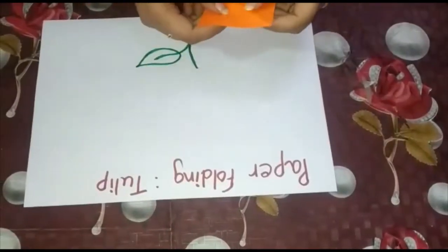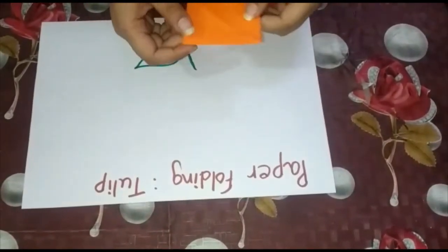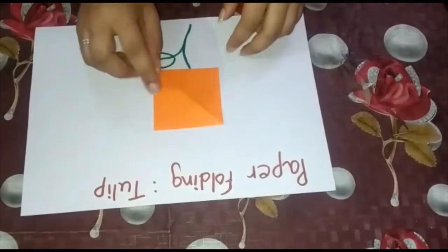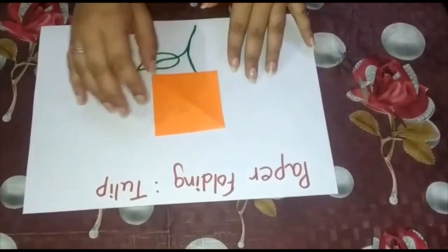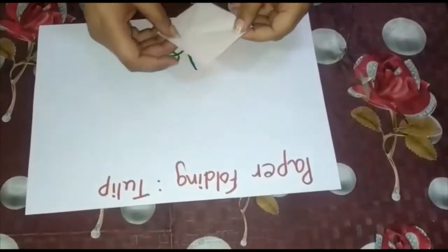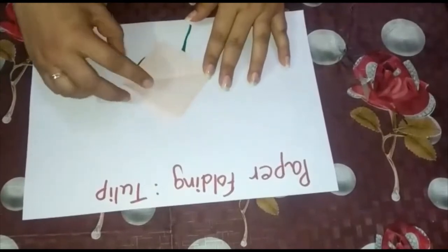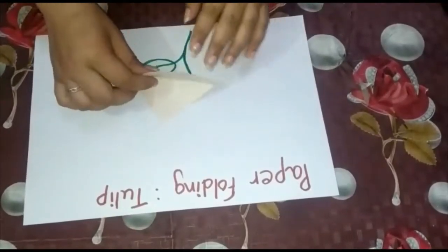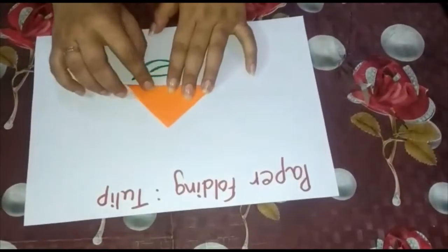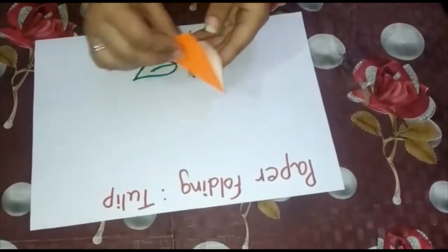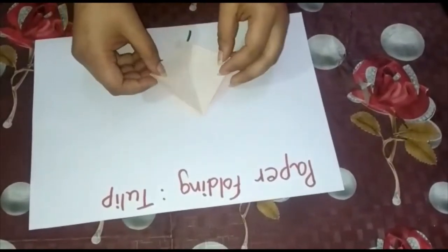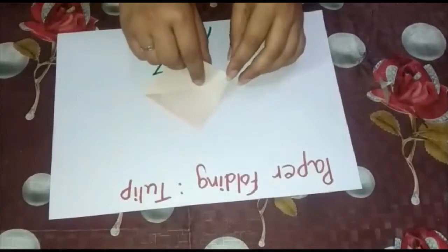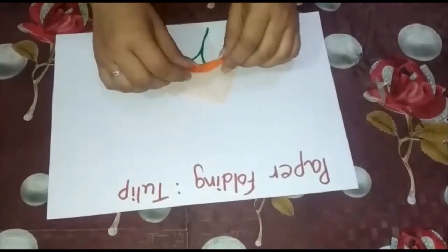Now we are going to make a paper folding tulip. I have one square. First, bring the bottom up to make a crease, then open it. Now from here, fold it.